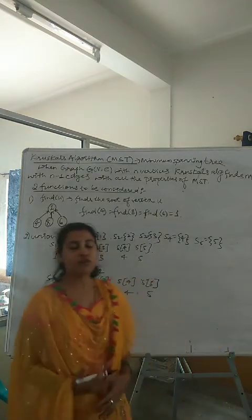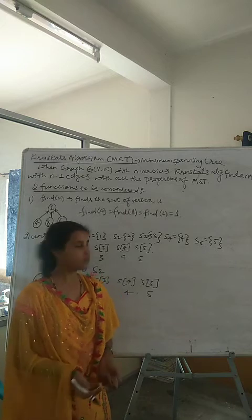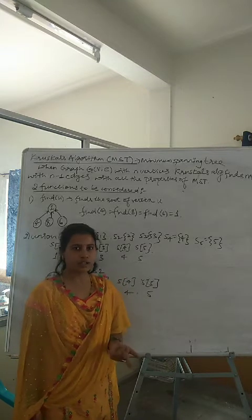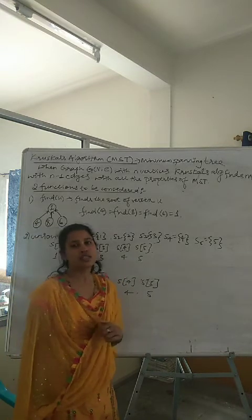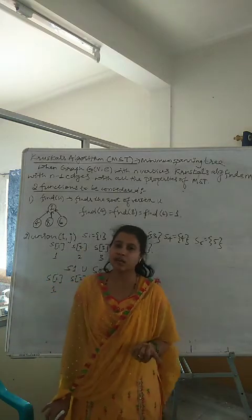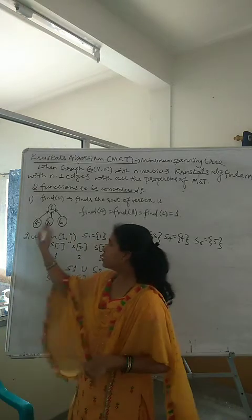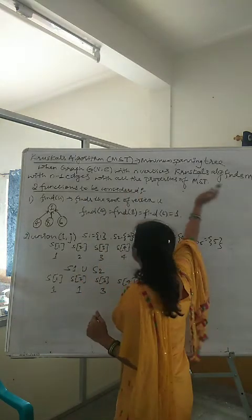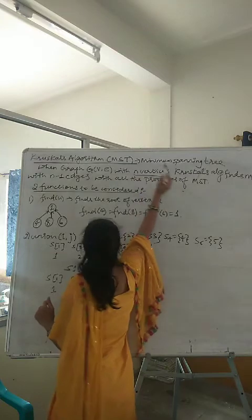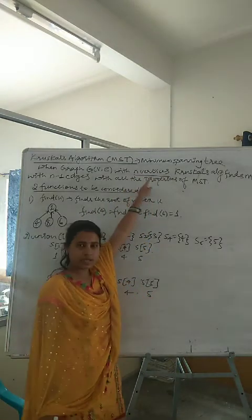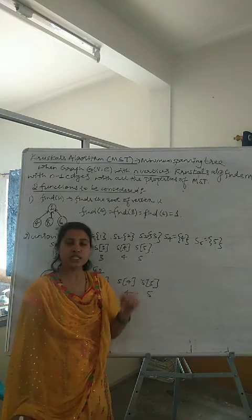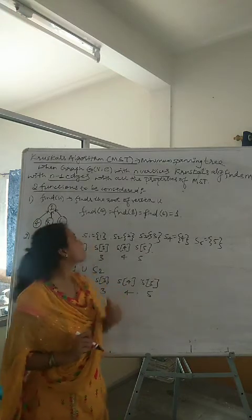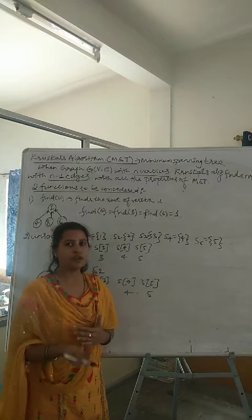In the last video, we have seen how to find the minimum spanning tree using Prim's algorithm. Next, in this video, we are going to see how to find the minimum spanning tree using another algorithm, that is Kruskal's algorithm. The main difference is that Kruskal's algorithm considers the concept that if a graph has n vertices, then its minimum spanning tree has n minus 1 edges. This extra concept is present in Kruskal's algorithm, and the tabular method is also different.